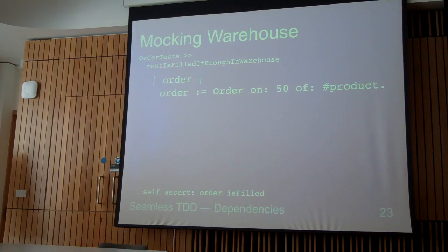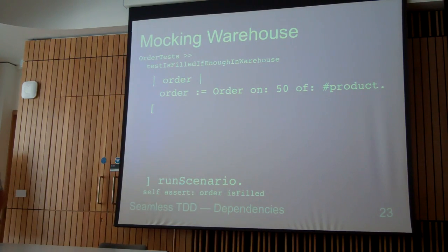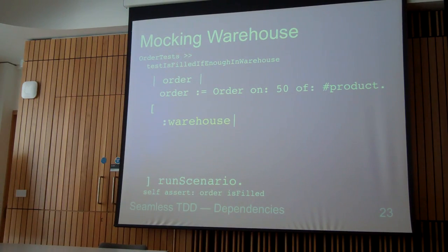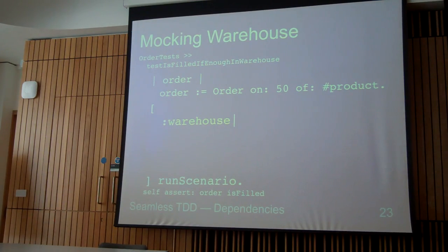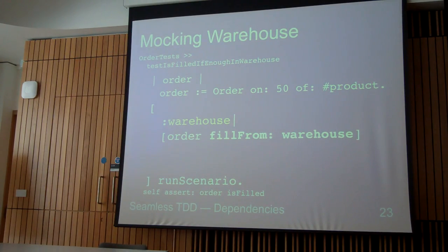What can we offer instead of a classic approach? We can mock our warehouse. I will show how — I will use mockistry. In mockistry, we can create a block that will be a scenario for our test. Arguments for this block will be mocked, so they will be assigned new mock objects. For example, warehouse in our test is a new mock object. So, we exercise our order by setting a fill from and pass warehouse, which is a mock.